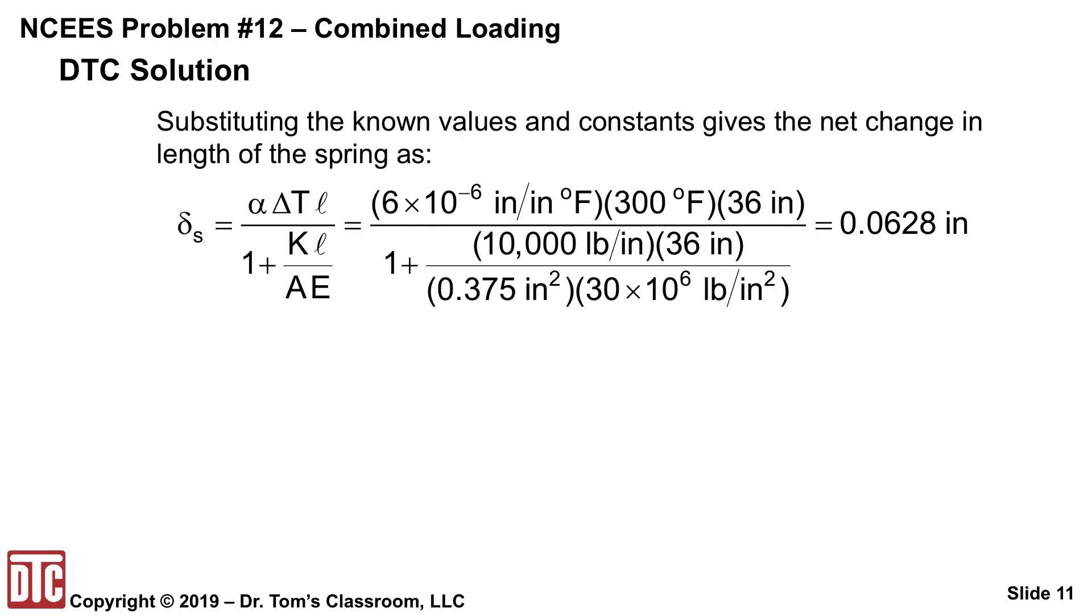So then, all that's left to do is to put in the known values and constants to get the net change in length of the spring. Unfortunately, the NCEES solution isn't really vigilant on units, so we've got to make sure of all of that. We've got 6 times 10 to the minus 6 inch per inch per degree F times 300 degrees F, that's canceled, we've got 36 inches, there's where our units are going to come from. 1 plus KL over AE...